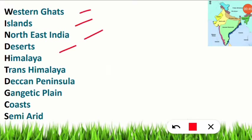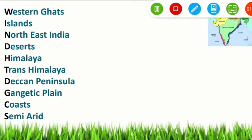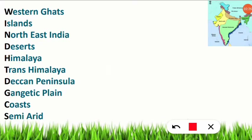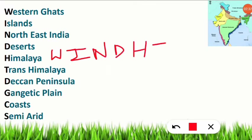I have written down all ten bio-geographical zones here — kindly note them down. You need to remember the initial alphabet of each zone: W for Western Ghats, I for Islands, N for Northeast India, D for Deserts, H for Himalaya, T for Trans Himalaya, D for Deccan Peninsula, G for Gangetic Plains, C for Coastal, and S for Semi-arid zone. So we get: W I N D H T D G C S.